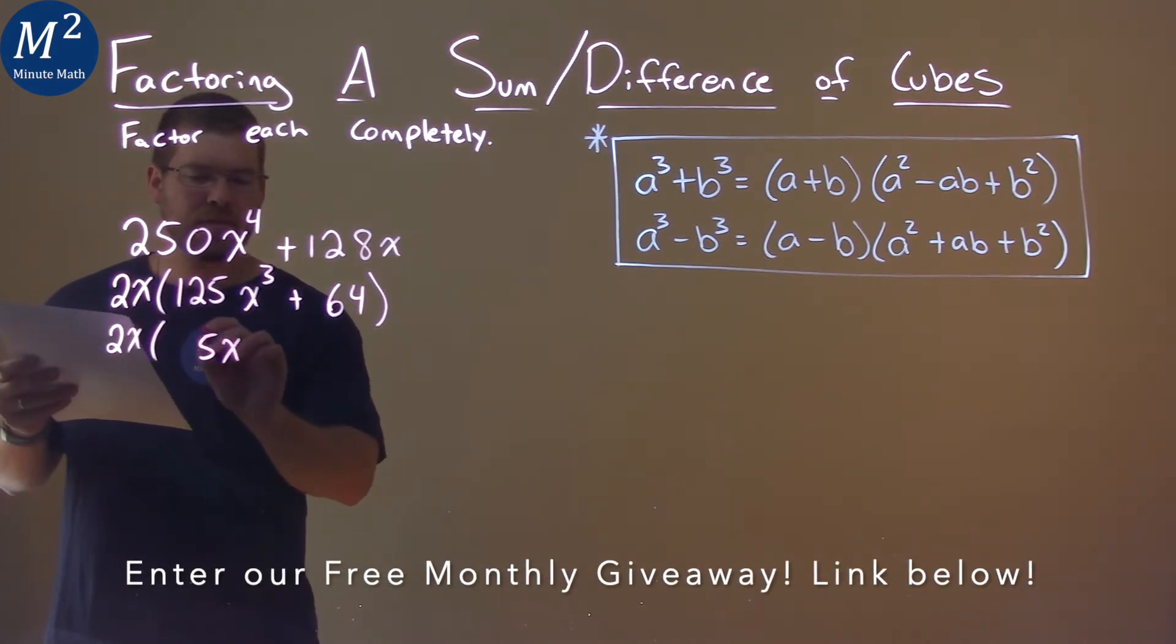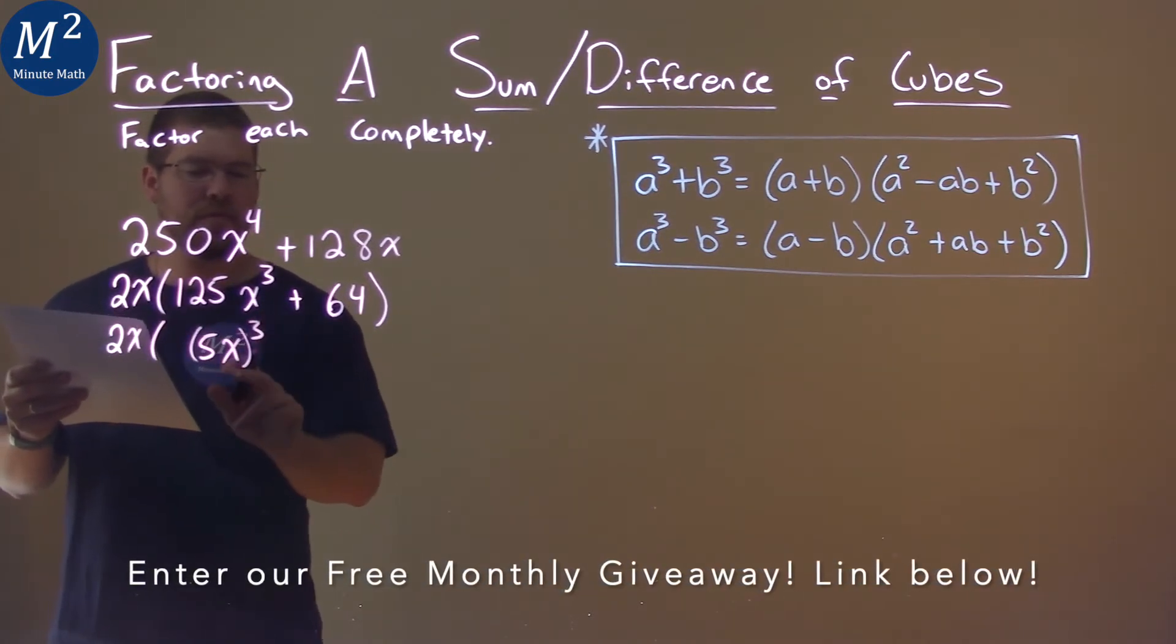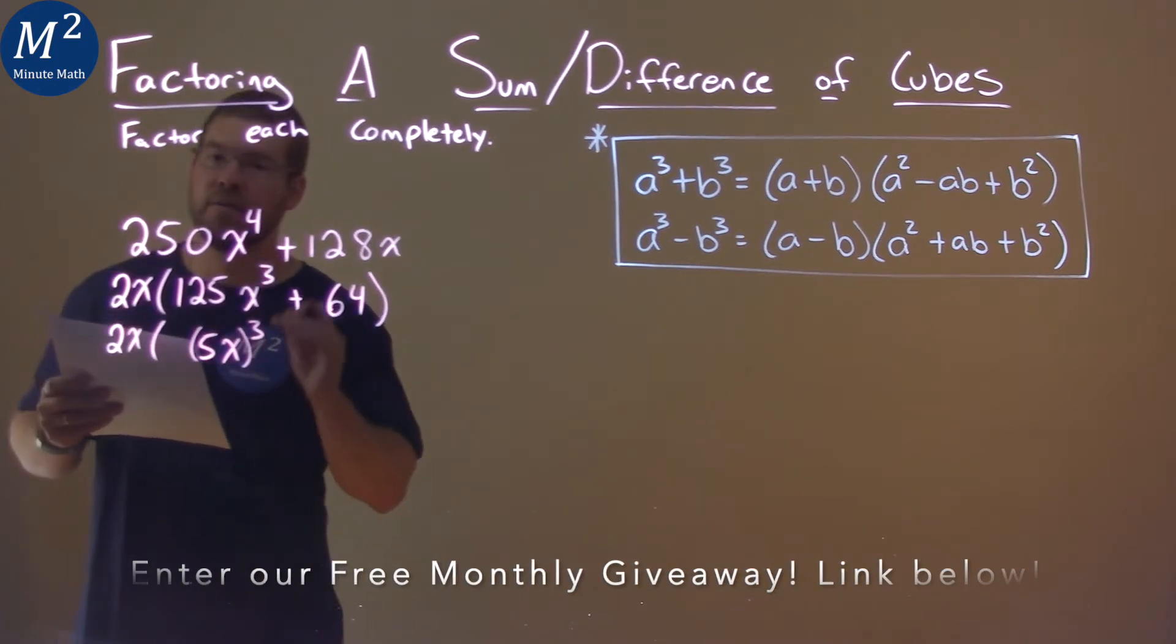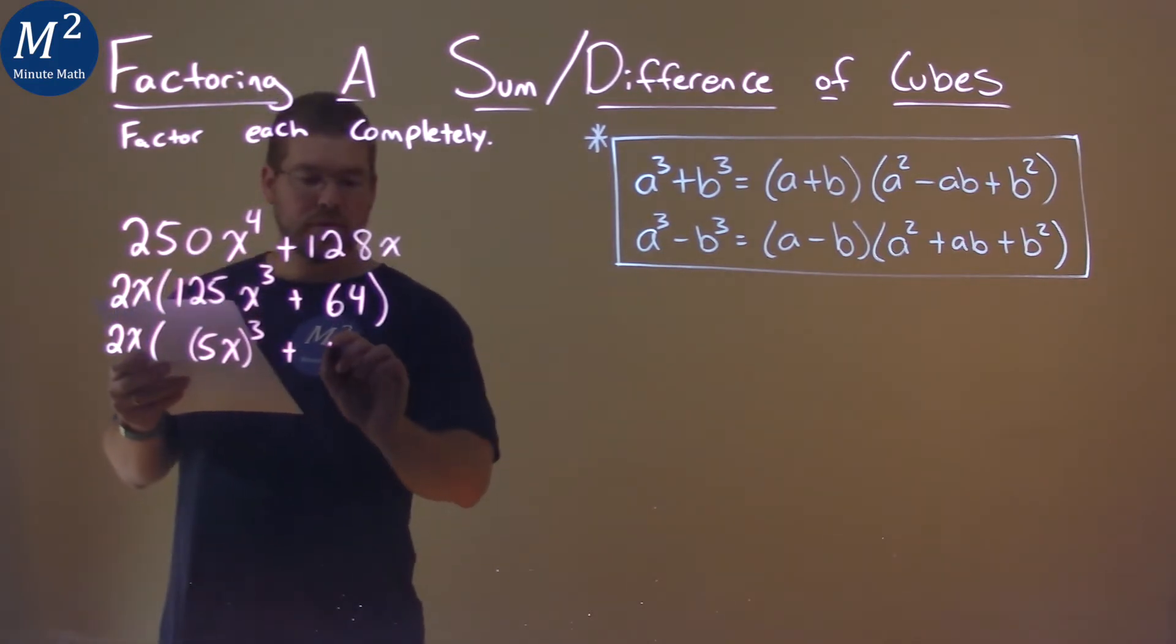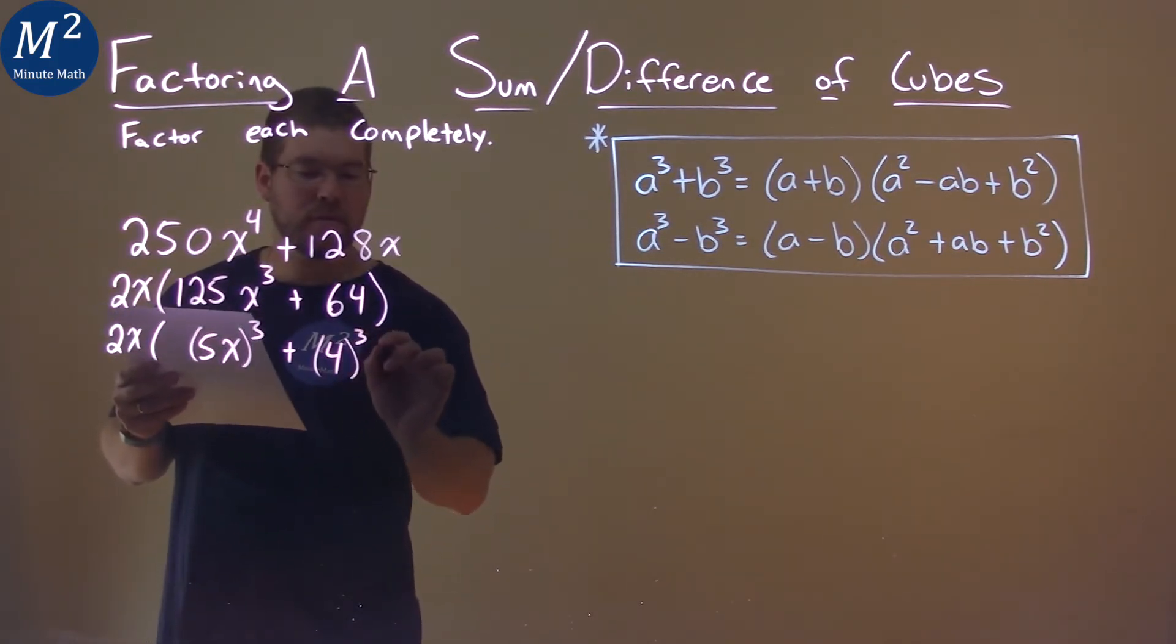and if we put the x here and we cube everything, 5x all cubed is 125x cubed. Plus 64, well that is 4 cubed, so we have 4 cubed.